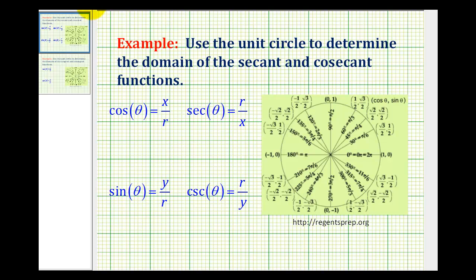And since we know division by zero is undefined, we must exclude the angles where the x coordinate would be zero on the unit circle from the domain of secant theta and we must exclude the angles from the domain of the cosecant function where the y coordinate would be zero on the unit circle.